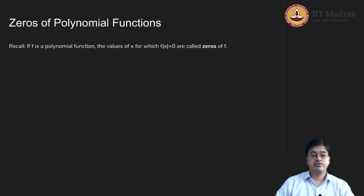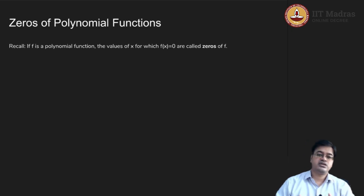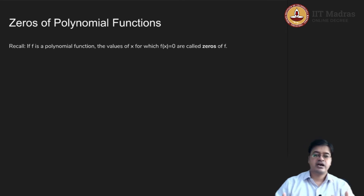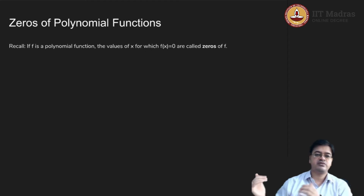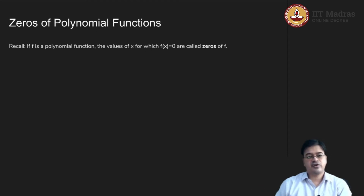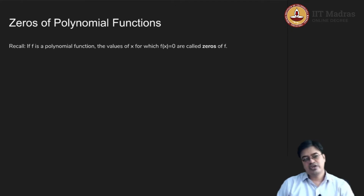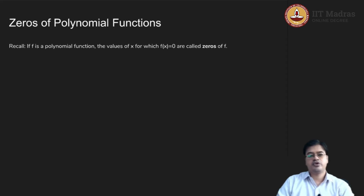Another way that will be helpful here is factoring the quadratic function. Given a quadratic function, identify the factors and write the polynomial in intercept form. If you can do that, you have identified the zeros, because when you set the factored quadratic equal to 0, the values corresponding to each factor are the zeros of the polynomial.